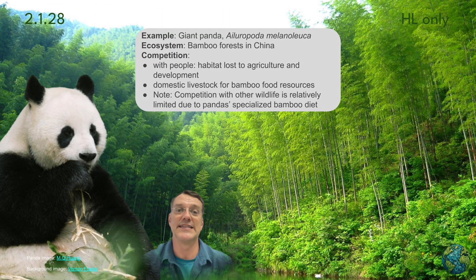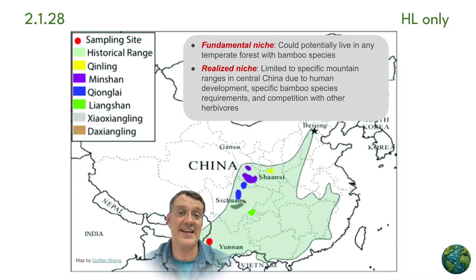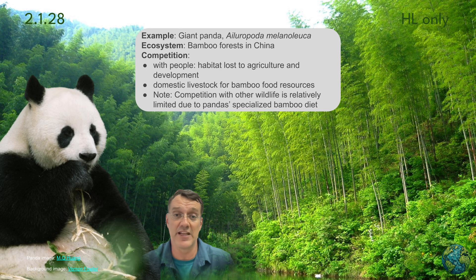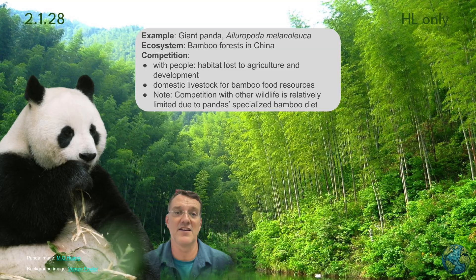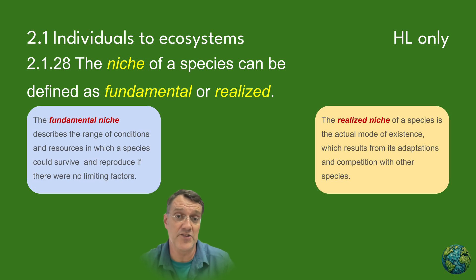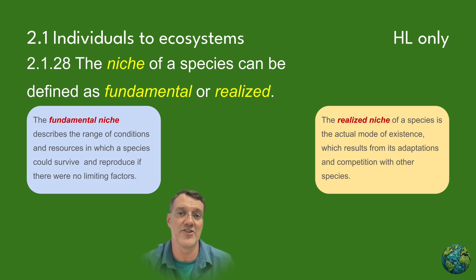The fifth example is the giant panda in China. The giant panda, Ailuropoda melanoleuca, could potentially inhabit any temperate forest with bamboo — that's its fundamental niche. But the panda's realized niche is limited to specific mountain ranges in central China. This is mainly due to human development and competition with livestock for space. Interestingly, competition with other wildlife is limited because the panda has such a specialized bamboo diet. In each of these cases, you can see how the realized niche is always smaller than the fundamental niche. Competition, whether with other species or with people, forces organisms to occupy only those areas where they have specific advantages over other species.